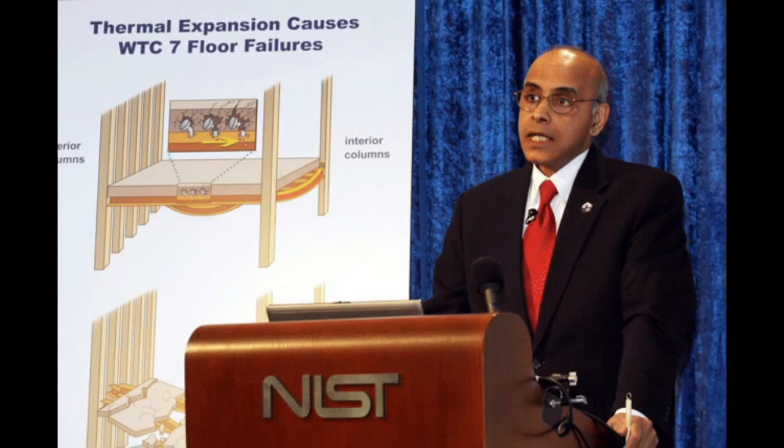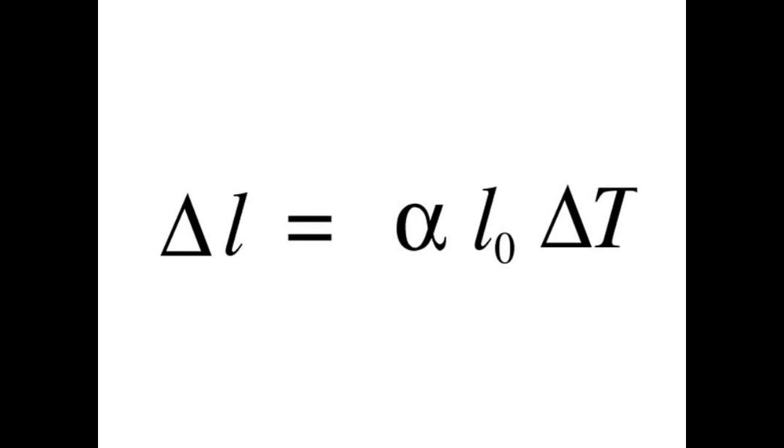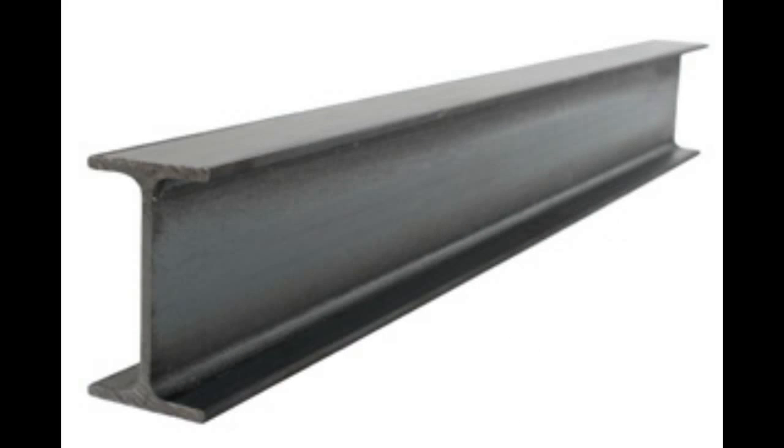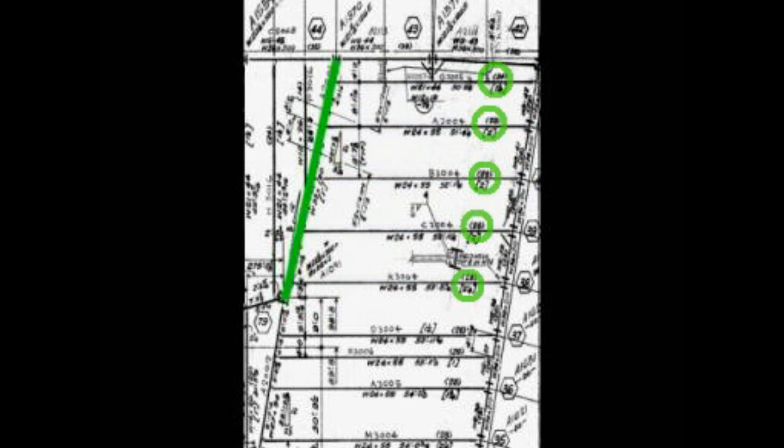But there are a few problems with the way that this calculation was done. This equation gives the expansion for unrestrained steel, and seeing as these beams were firmly attached at each end and had shear studs across their span, they were hardly unrestrained.